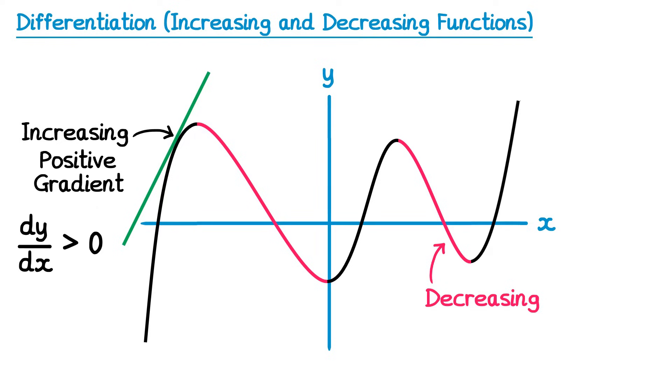In the red section however, if we draw a tangent it will be sloping downwards, so it has a negative gradient, in which case dy/dx, the gradient function, must be less than zero.